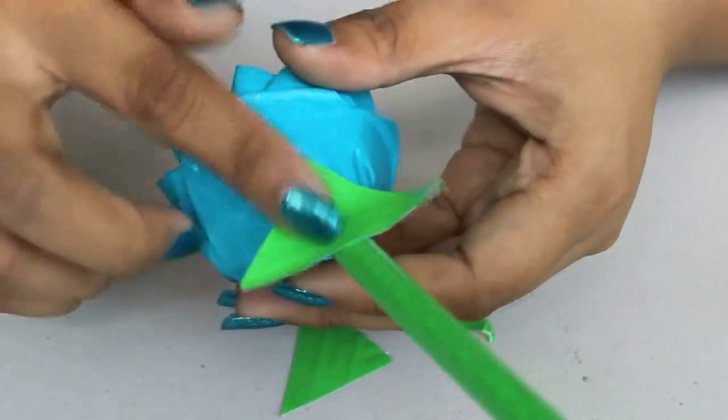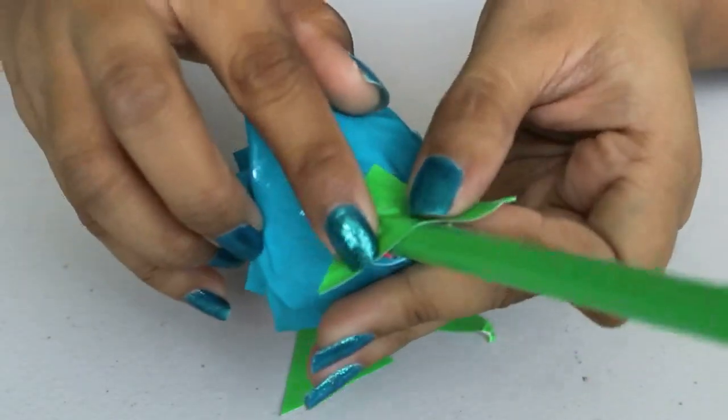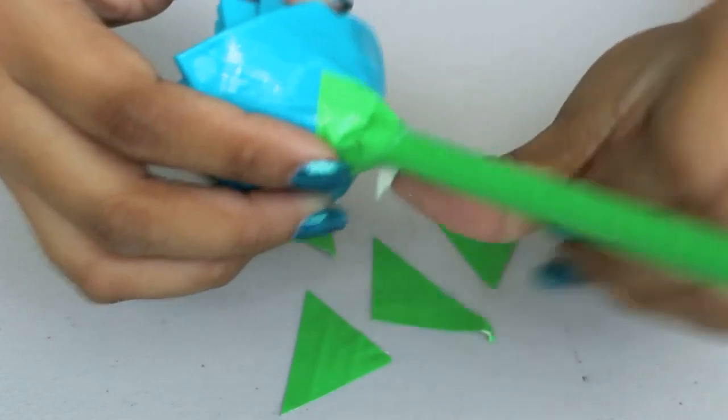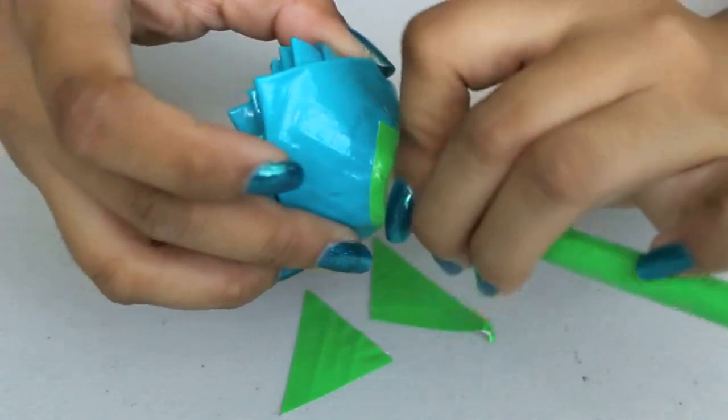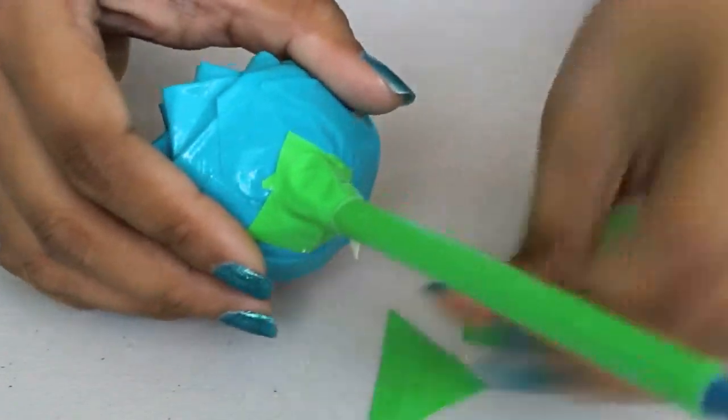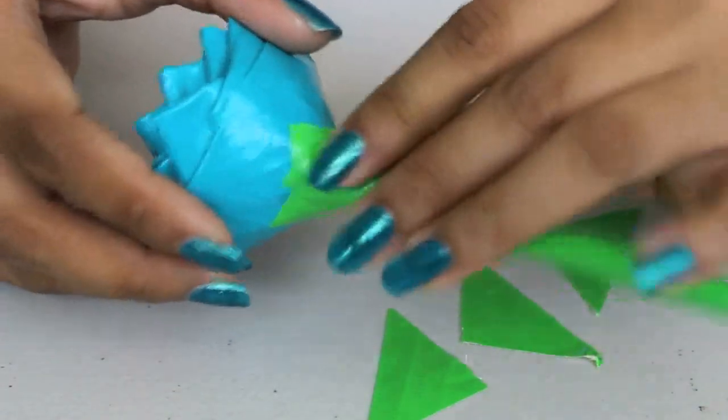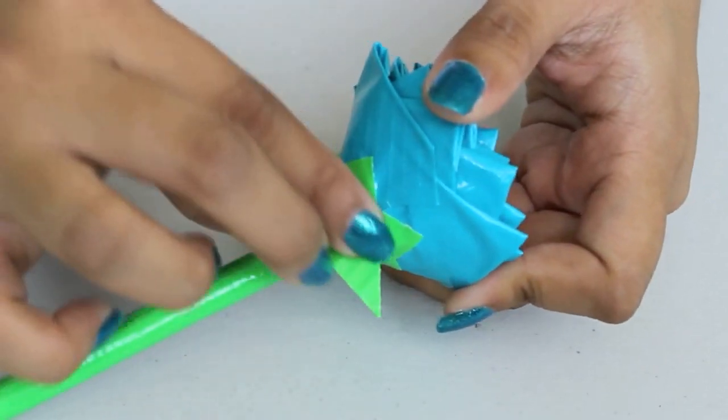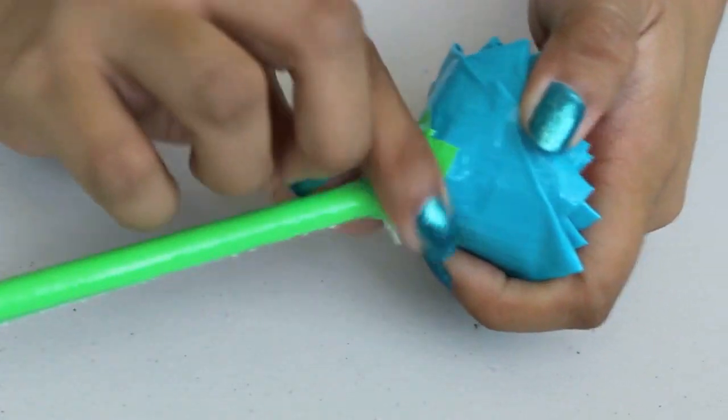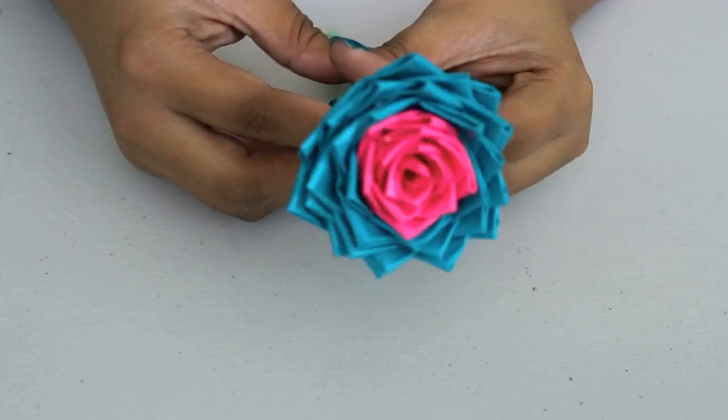At the base where the petal meets the stem, we're going to hide it by placing these triangle shapes with the pointy side up. Just wrap them around, making sure that they're all even and placing them opposite of each other, kind of the same way we did the petals. And now your flower pen is finished.